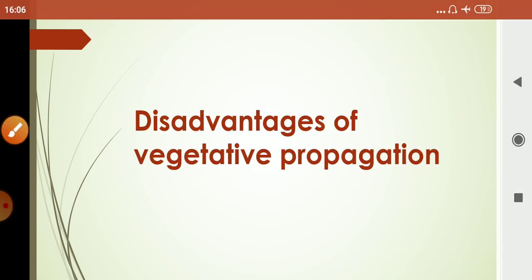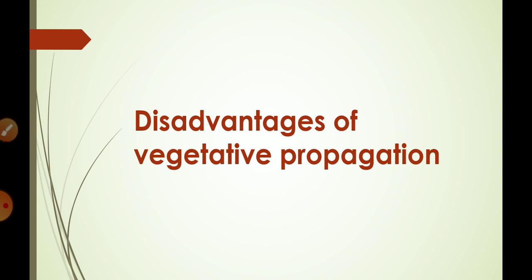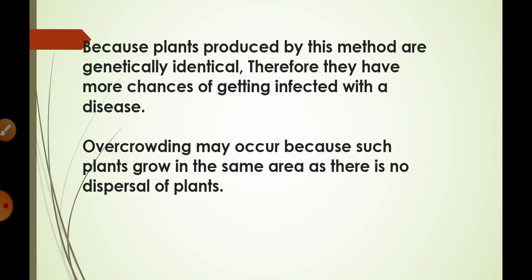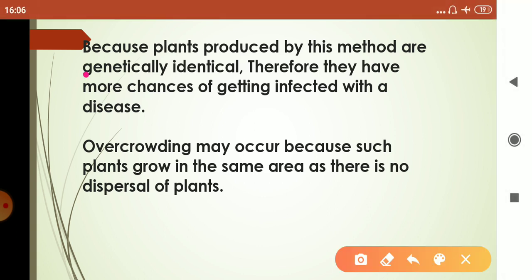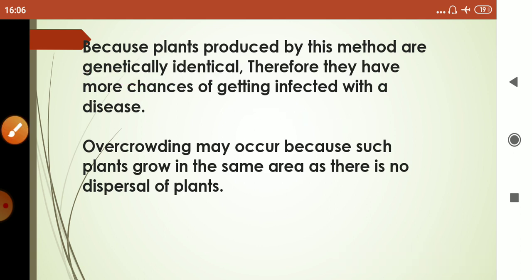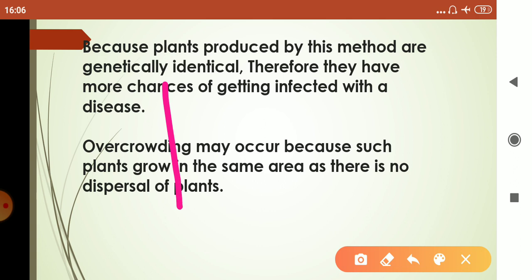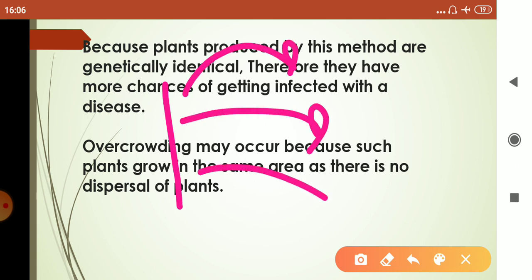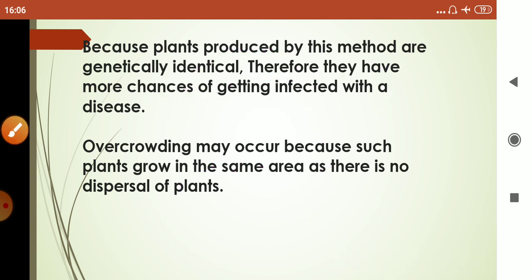Now moving on to the disadvantages of vegetative propagation. Because the plants produced by this method are genetically identical, there are more chances of getting infected with disease. If the plant selected for vegetative propagation is diseased, then the new plants produced will also be infected with the same disease.